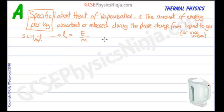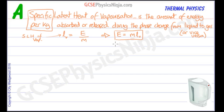We can rearrange this equation to the form: energy absorbed or released equals M times Lv. That's a useful equation for calculations. The second part of this topic requires us to describe a simple experiment to measure the specific latent heat of vaporization of water.